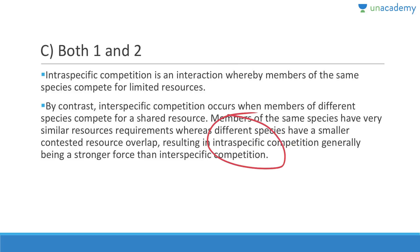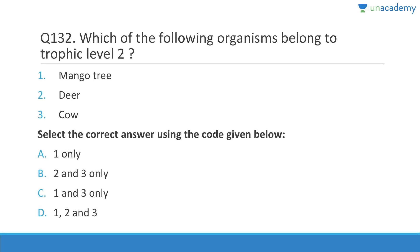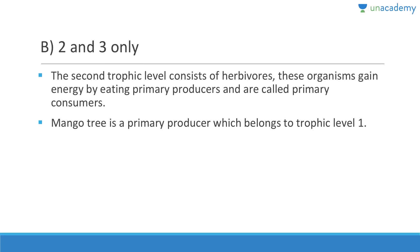Trophic level two includes herbivores like zooplankton, cows, and buffaloes. Mango tree is a tree, so it belongs to trophic level one. Hydrosphere includes all water bodies — swamp, river, ocean — everywhere there is water. Biosphere is where life exists, encompassing parts of the hydrosphere, atmosphere, and lithosphere. Hydrosphere can be liquid, vapor, or ice.